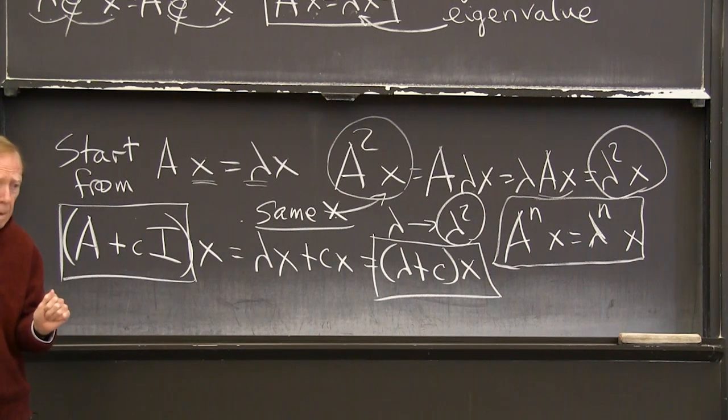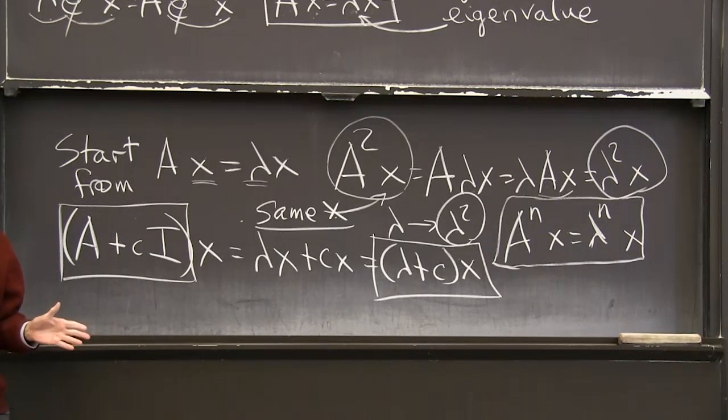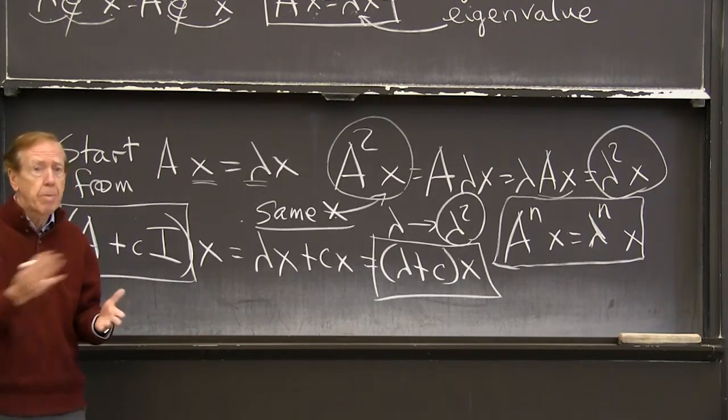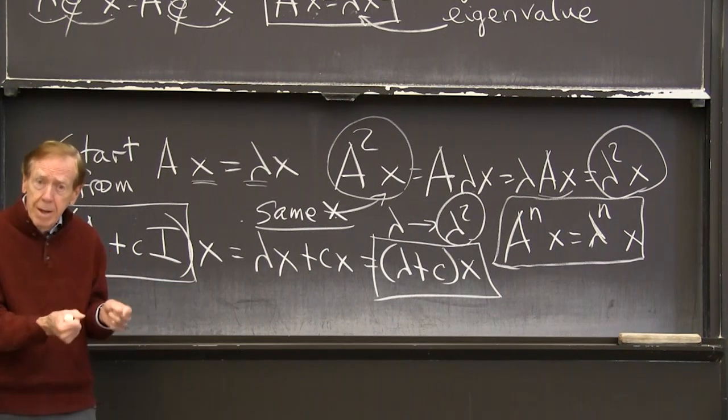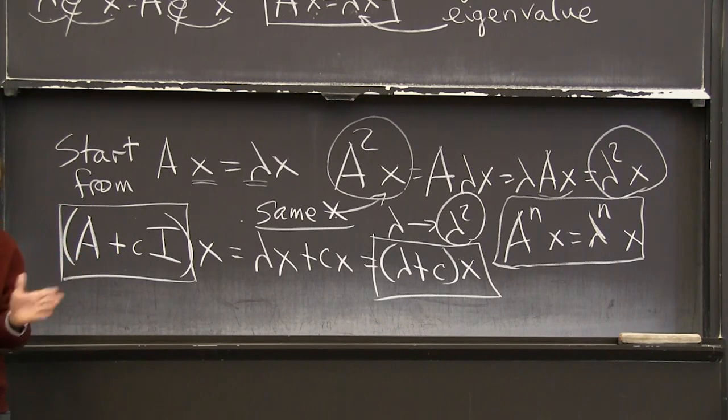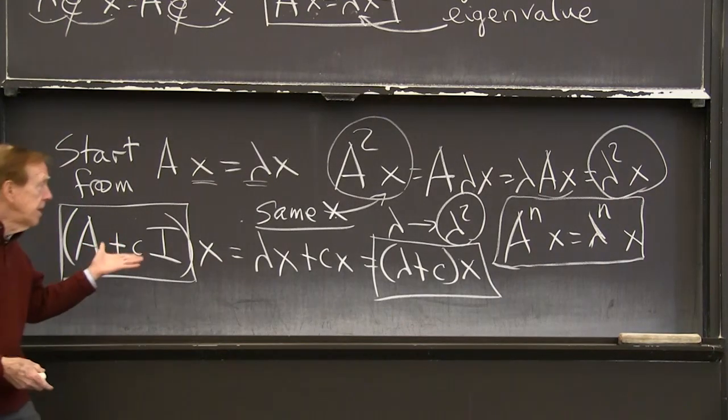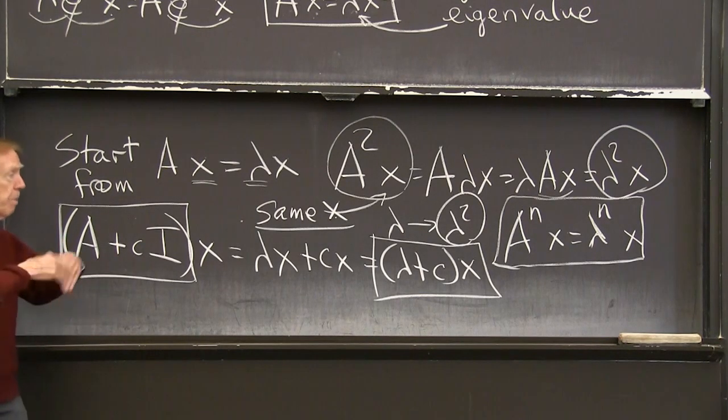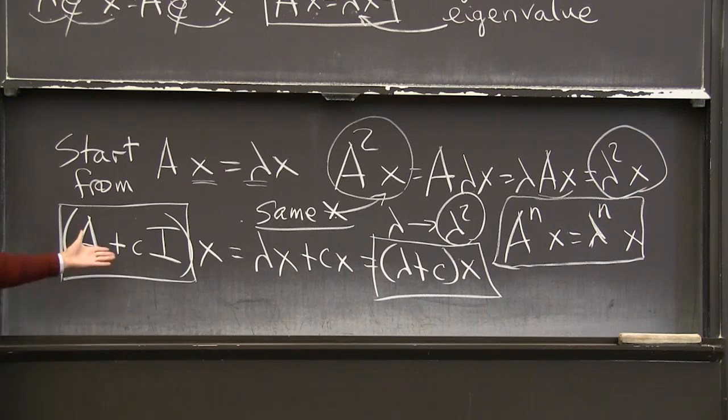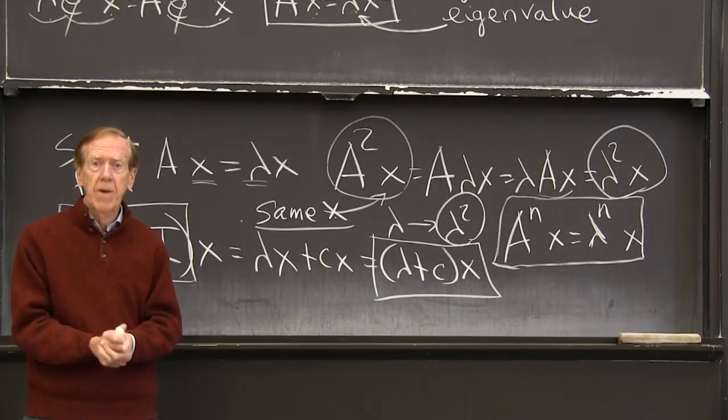But don't think if I had two matrices, A and B, with different eigenvectors, then I don't know what the eigenvectors of A plus B would be. I don't know those. I can't tell the eigenvectors of A times B, because A has its own eigenvectors, and B has its eigenvectors. And unless they're the same, I can't easily combine A and B. But this shows, as long as I'm staying with one A and its powers and steps like that, no problem. OK. I'll stop there for a first look at eigenvalues and eigenvectors.